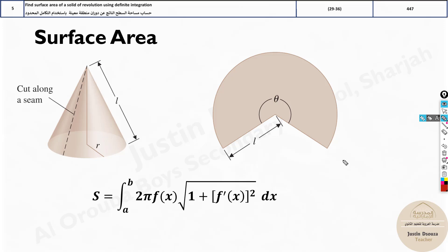You might remember this - the arc length formula. The addition of 2π f(x), the function, is what's needed to find the surface area.